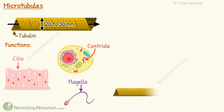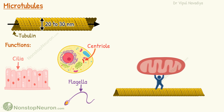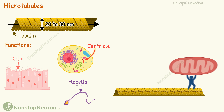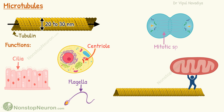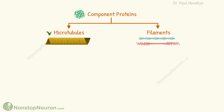Microtubules serve as ropes along which motor proteins walk to transport organelles from one part of the cell to another. They also form mitotic spindles during mitosis.